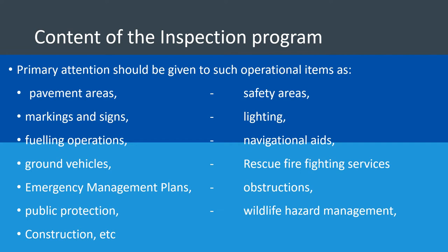All these things need to be regularly inspected, and it is the responsibility of the aerodrome operator to ensure that these inspections are conducted and completed with the right actions taken. A single inspection sheet may capture groups of these items — for example, you can add pavement, markings, and lighting on one form — but you may need a separate form for monitoring emergency management plans or wildlife hazard activities, depending on the size of your aerodrome.